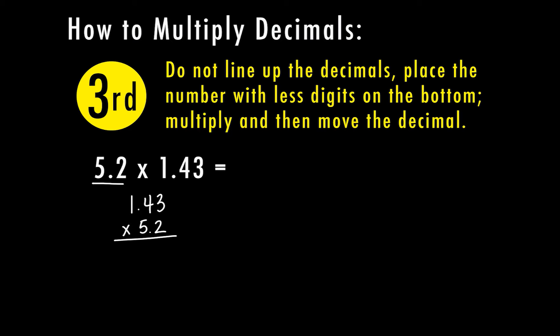Let's go ahead and multiply this out. 3 times 2 is 6. 2 times 4 is 8. 2 times 1 is 2. I'm finished with the 2. Now I need to bring down a 0 as a placeholder. 5 times 3 is 15. 5 times 4 is 20, plus 1 is 21. 5, 6, 7.